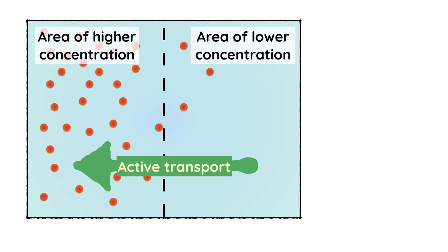You can see that we've got an area of higher concentration and an area of lower concentration, but the material is moving against that concentration gradient. In order for this to happen, energy is required, and this is provided in the form of ATP.